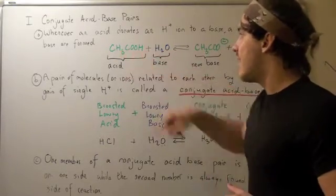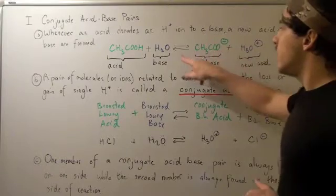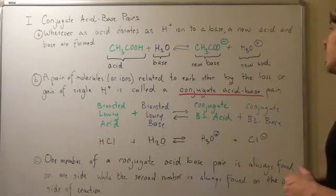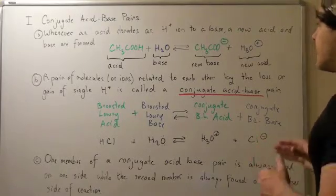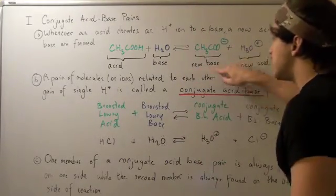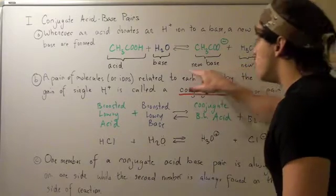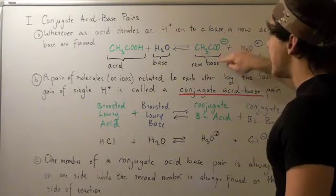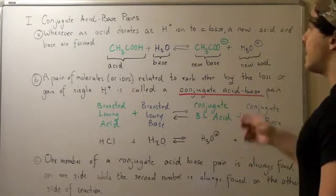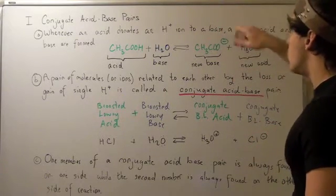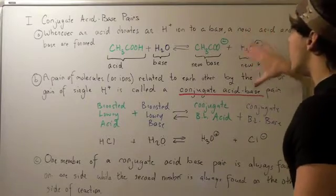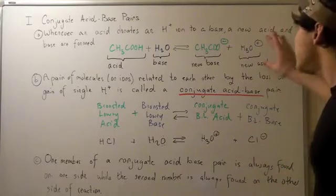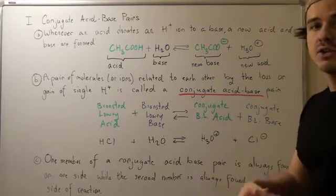When they react, acetic acid loses an H-ion while water gains an H-ion. The acetic acid becomes our new Brønsted-Lowry base because it now has the potential to gain an H-ion — it has that electron pair on the oxygen atom. Water, now having an extra H-ion, has the potential to donate one, so it becomes our new Brønsted-Lowry acid.